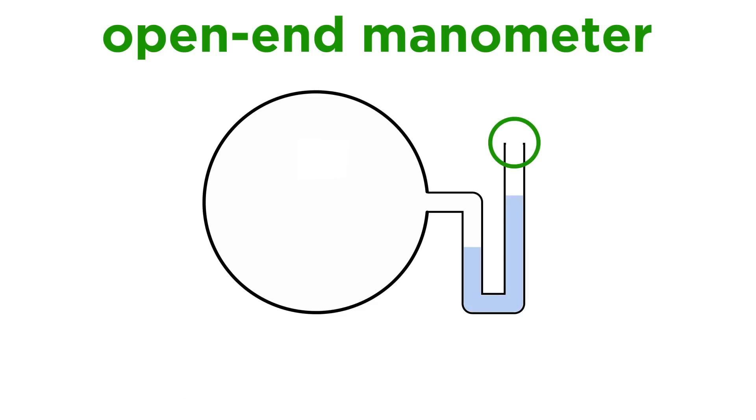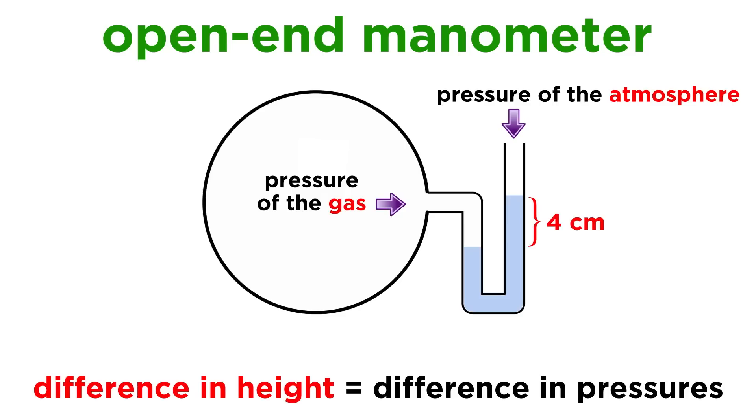There can also be open-end manometers, in which the top of the tube is open to the atmosphere. In this case, the height of the two arms of the liquid will depend on both the pressure of the gas and atmospheric pressure, and the difference in height will be equal to the difference in the two pressures, the one in the bulb, and the one outside of the apparatus.